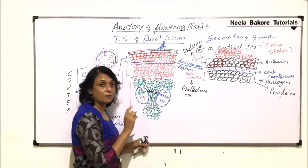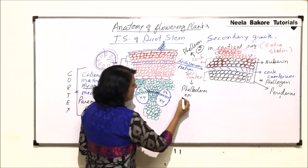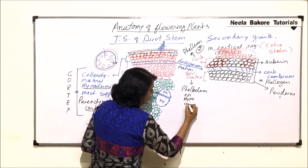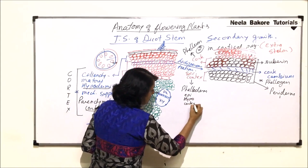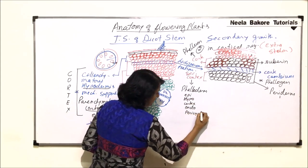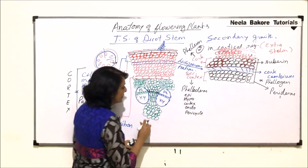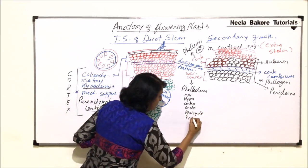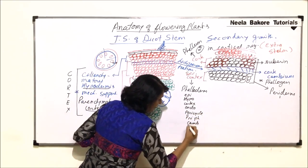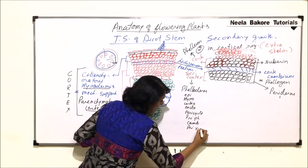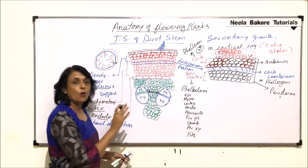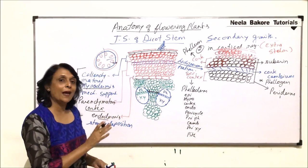The primary tissue from outermost to innermost: epidermis, then hypodermis, then cortex, then endodermis, then pericycle, then primary phloem, then cambium, then primary xylem, and innermost was pith. This was the original primary tissue.